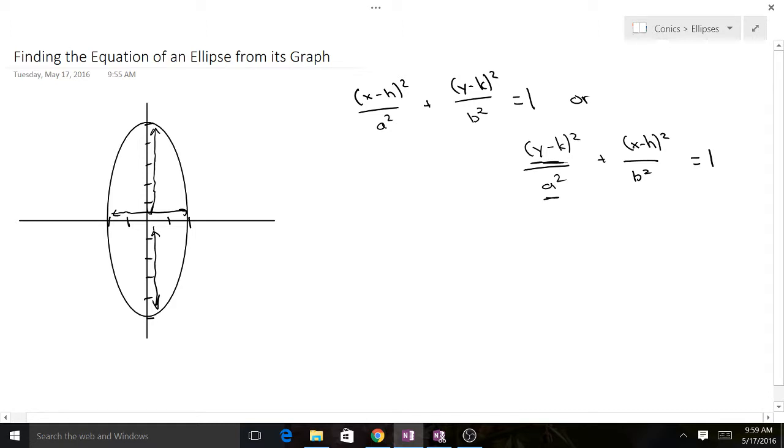And then the value of a is just the distance from the vertex right here all the way to the center which is 1, 2, 3, 4, 5. So a is going to be 5, a equals 5.